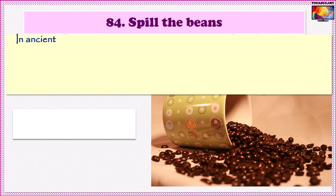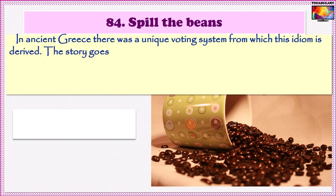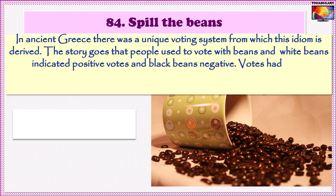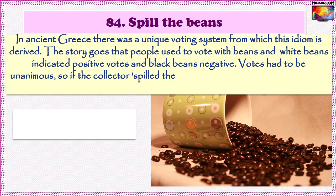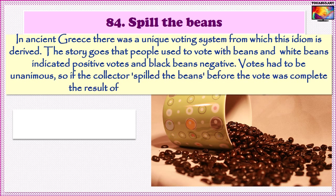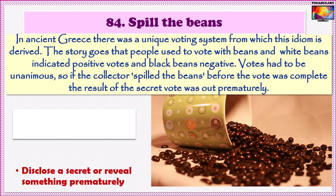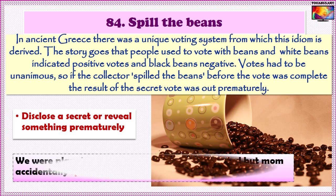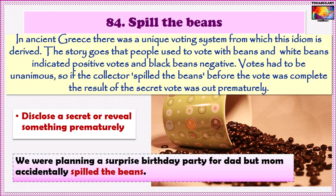Idiom No. 84 is 'Spill the beans.' It is said that in ancient Greece there was a unique voting system from which this idiom is derived. People used to vote with beans — white beans indicated positive votes and black beans negative. Votes had to be unanimous, so if the collector spilled the beans before the vote was complete, the result of the secret vote was out prematurely. So the phrase means to disclose a secret or reveal something prematurely. For example: 'We were planning a surprise birthday party for dad but mom accidentally spilled the beans.'